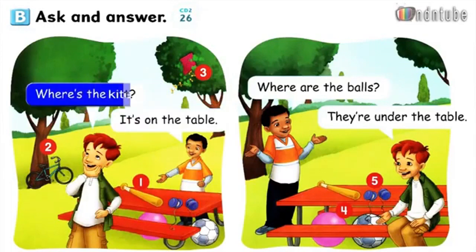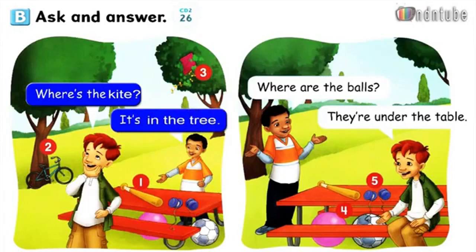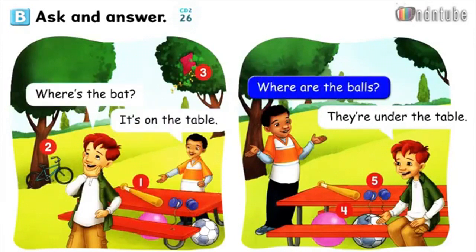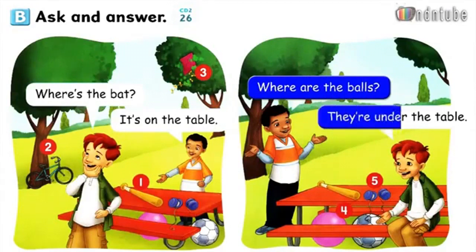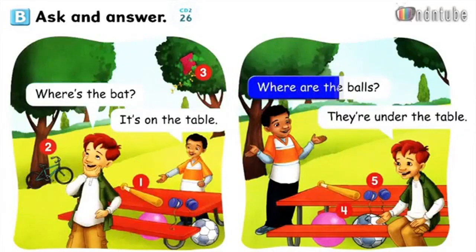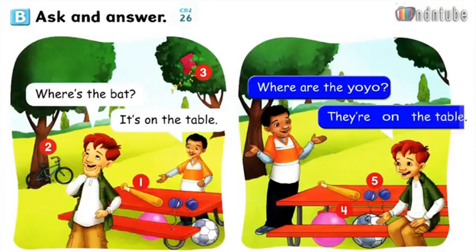Where's the kite? It's in the tree. Where are the balls? They're under the table. Where are the yo-yos? They're on the table.